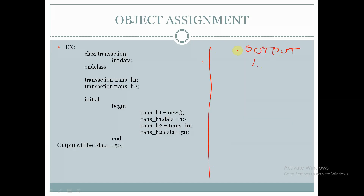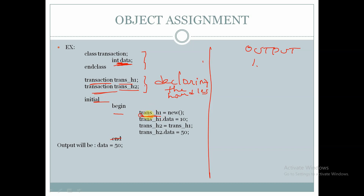Let's see another example for object assignment. Here we have declared a class called transaction and declared the member called data of int type. We are declaring two handles called trans_h1 and trans_h2 of type transaction. Within the initial begin block, we are creating memory for the handle trans_h1 by using the keyword new.